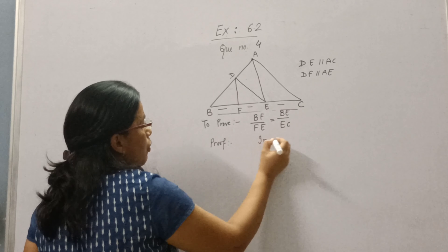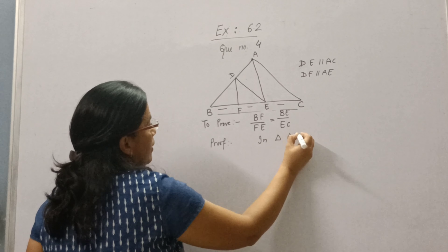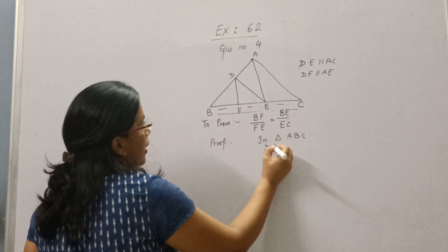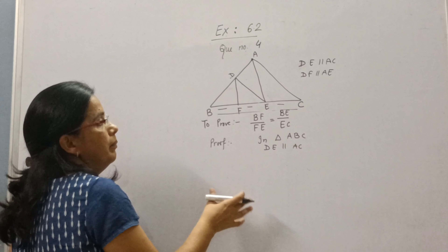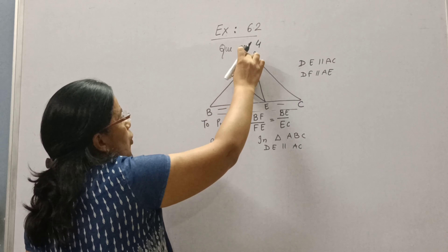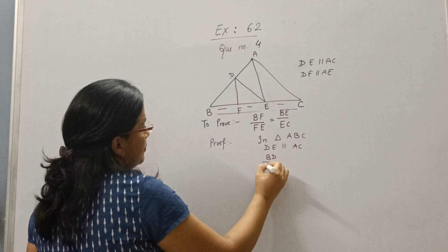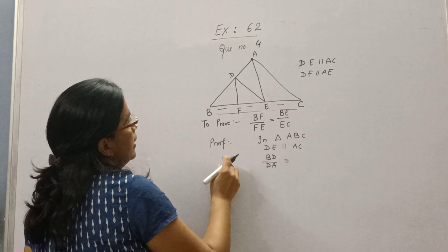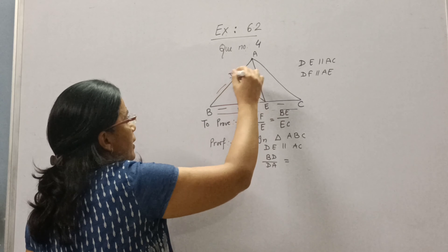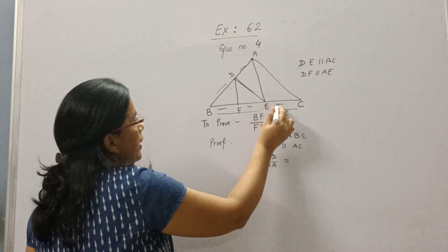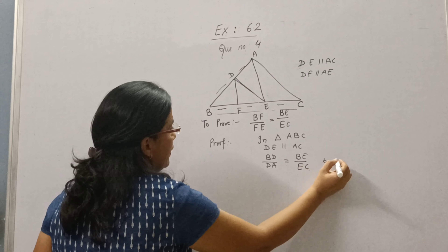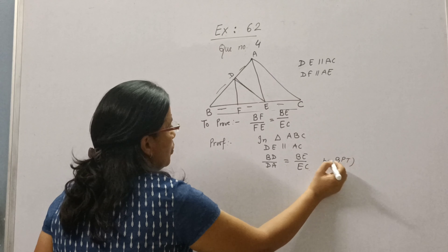Greetings everyone. Today we will do question number 4 of exercise 6.2. In question number 4, the figure is given. According to the figure, DE is parallel to AC, and DF is parallel to AE. We have to prove that BF upon FE is equal to BE upon EC.